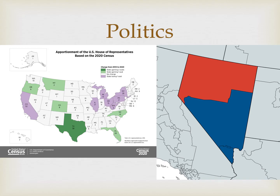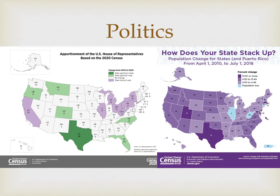Shifting gears — how might geographic data be used within the realm of politics? Every 10 years, the census is conducted to count the population of the United States. That poll helps to determine regions where population has changed, but for a different reason than Walmart might be interested in. The distribution of members of the U.S. House of Representatives is adjusted based on population change. States that lost population, like California, will have fewer members in Congress, and states that gained population, like Texas, might have more.